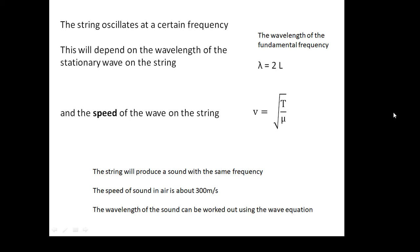The string oscillates at a certain frequency, and we can work out the fundamental frequency. We know that the wavelength is twice the length of the string because the length is half a wavelength. We have this equation: v equals root T over mu, where T is the tension and mu is the mass per unit length. That tells us the speed of the wave on the string. The string vibrates at a certain frequency, and that will produce a sound which has the same frequency. The speed of sound in air is about 300 meters per second, and we can work out the wavelength of the sound wave using v equals f lambda.